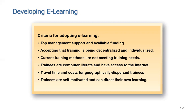Trainees need to be computer literate — they need to know how to access the internet, use a laptop or computer, and use the software that links them with different resources. Travel time, cost, and geographical dispersion are also factors — the internet can merge people at one time and one place so they can see each other face to face.